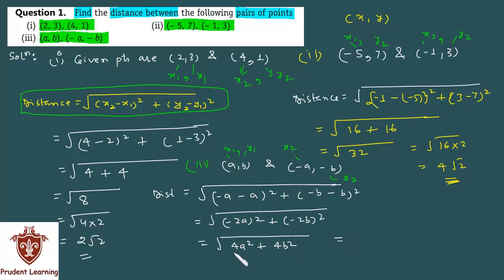If you see, 4 is common in both these terms. Taking 4 common, we get a square plus b square. And the square root of 4 you can take out as 2, and under the root you get a square plus b square.